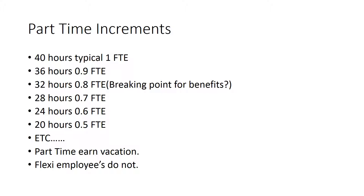This last slide is a basic overview of part-time increments for FTE calculations. A 40-hour week is one full-time equivalent. Calculations are done by the tenth: 36 hours is 0.9 FTE, 32 is 0.8, 28 is 0.7, 24 is 0.6, 20 is 0.5, and so forth. The key breaking point for benefits is at 32 hours — that's when full benefits typically come into play, though I've heard of thresholds at 30 and 28 hours as well.